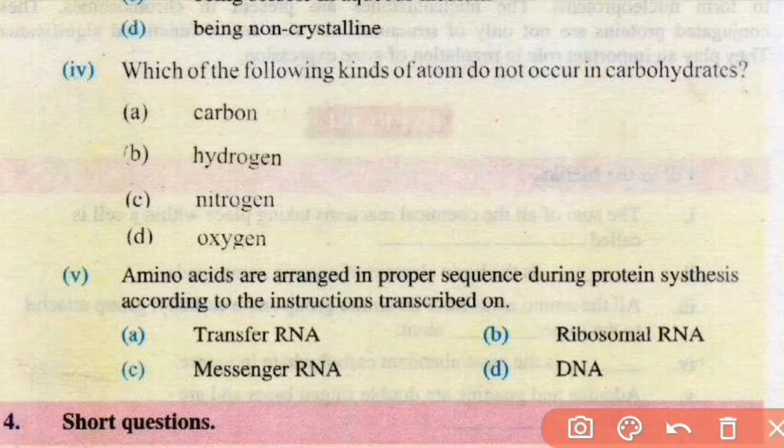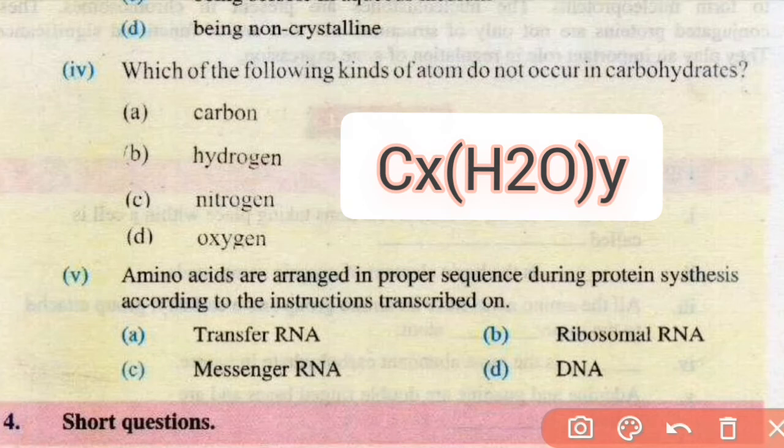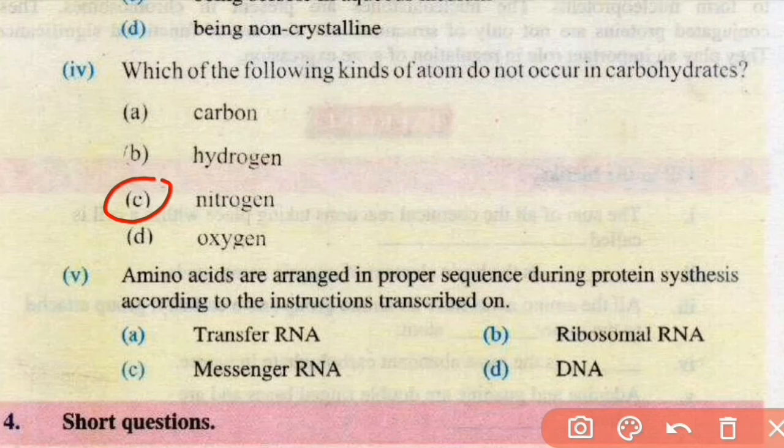Number 4, which of the following kinds of atoms don't occur in carbohydrates? Carbon, hydrogen, nitrogen, or oxygen. Yeh carbohydrates ka general formula hai Cx(H2O)y. Iske andar carbon, hydrogen aur oxygen hote hain jabke nitrogen nahi hoti. Right answer is C.